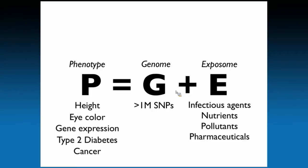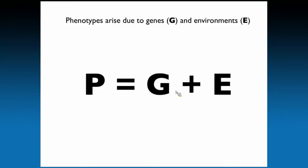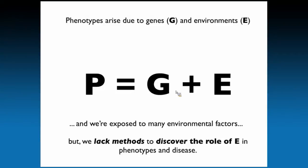The genome — the inherited factors we may be concerned with — also consists of a multitude of factors, including 30,000 genes and over a million SNPs in each of us, on the order of 10 million SNPs between all of us. The exposome is the concept of comprehensive environmental factors we encounter from birth to death: things like infectious agents, nutrients, pollutants, and pharmaceutical drugs — non-genetic factors that also influence phenotype.